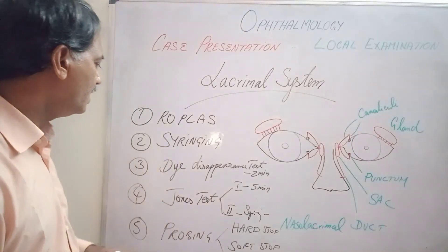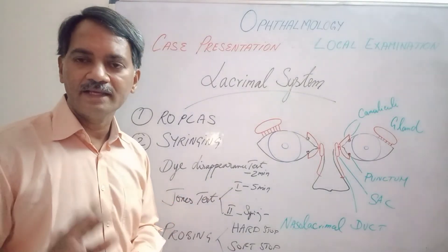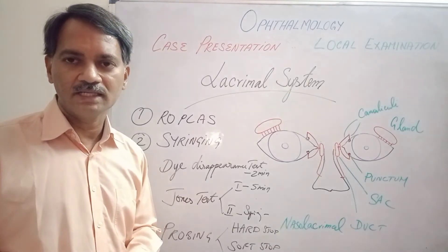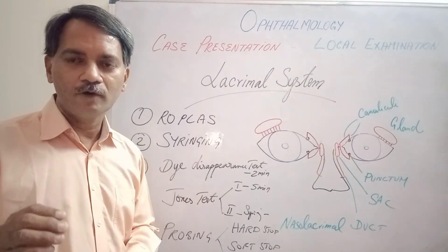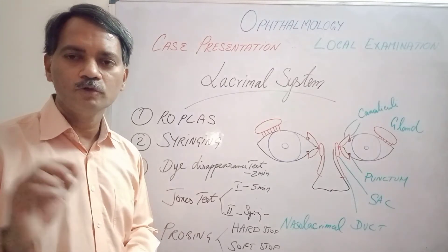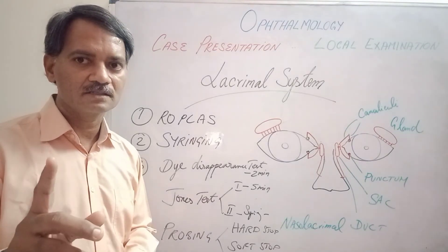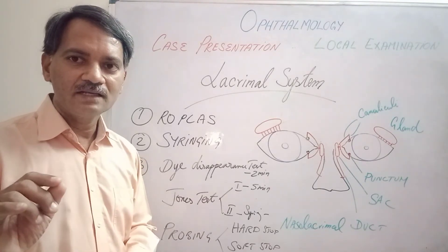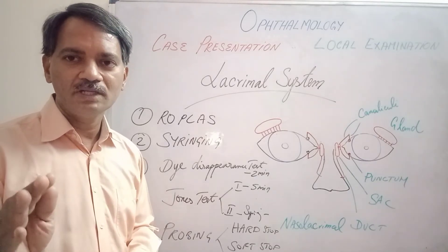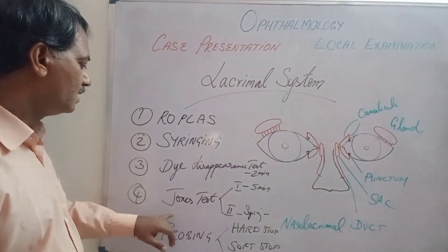The dye disappearance test is usually done in young children. One drop of fluorescein is instilled into the conjunctival sac and the disappearance time of the dye is noted. Normally the dye disappears within two minutes. It is performed in a cooperative child, as crying may wash out the fluorescein.